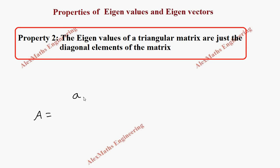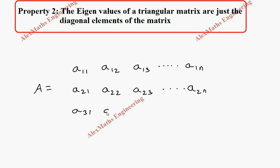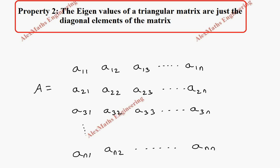The general form of a matrix: suppose we take a matrix A with first element a11, then a12, a13, up to a1n. Similarly, the second row will be a21, a22, a23, up to a2n. The third row will be a31, a32, a33, up to a3n, continuing in the same way till the last row an1, an2, up to ann. This is the general form of a square matrix.